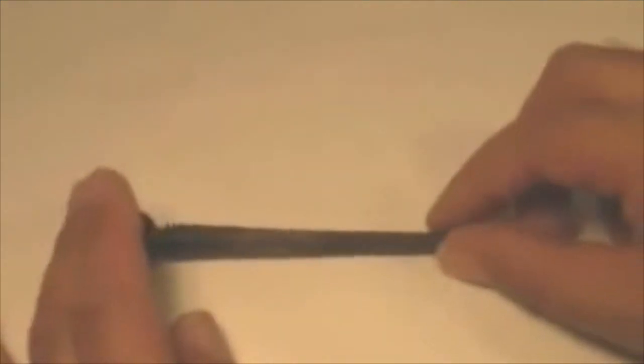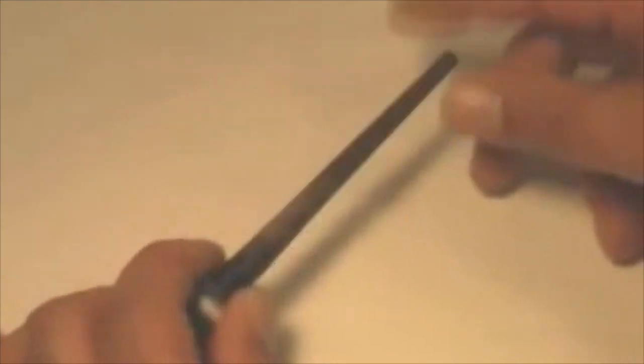Once you have the peg out, the idea is to check it and make sure there's no shiny spots. If there are shiny spots, you want to use a file—this is just a wood file—and lightly rough up anywhere that's been burnished by turning in the holes of the sitar.